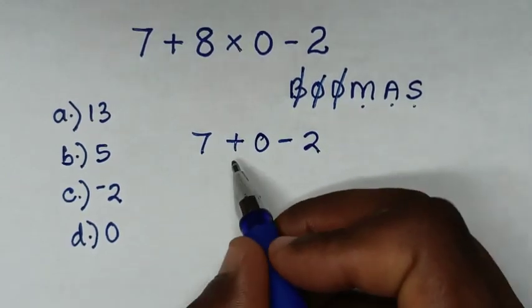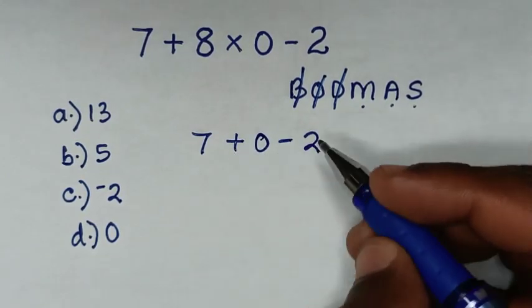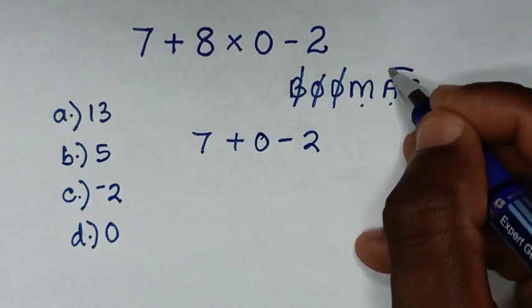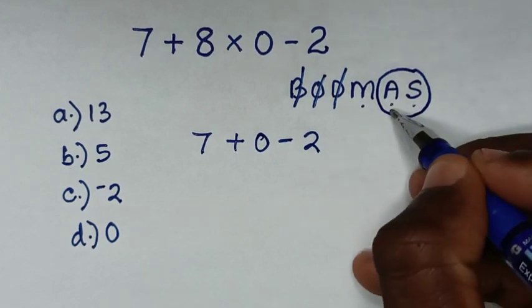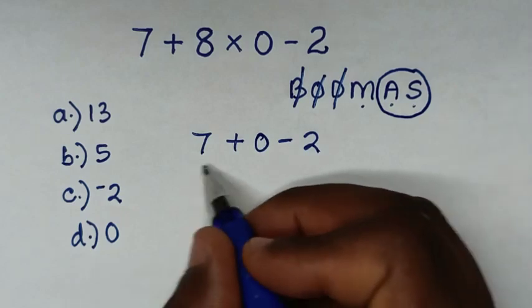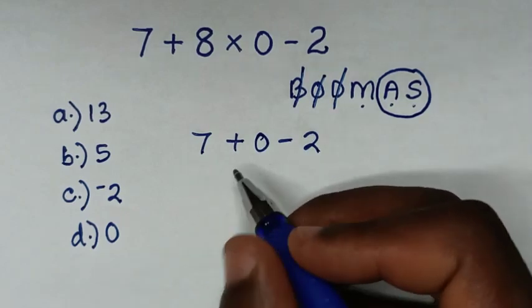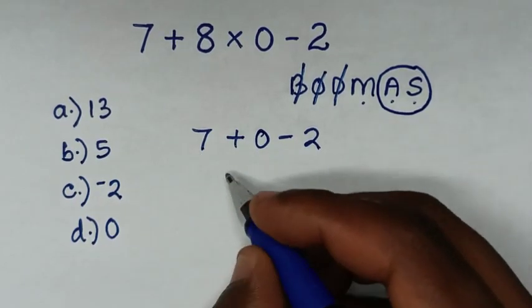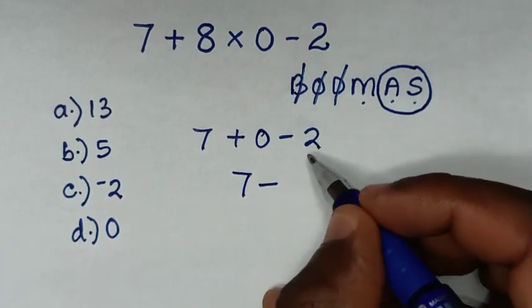Now in here, we're left with addition and subtraction. So we'll deal with this group of addition and subtraction according to our search phase. In this problem, it starts with addition, which is 7 plus 0 is 7, then minus 2.